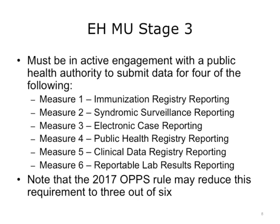The Meaningful Use Stage 3 Public Health Objective requires that eligible hospitals be in active engagement with a public health authority to submit data for three of the following: Measure 1, Immunization Registry Reporting; Measure 2, Syndromic Surveillance Reporting; Measure 3, Electronic Case Reporting; Measure 4, Public Health Registry Reporting; Measure 5, Clinical Data Registry Reporting; and Measure 6, Reportable Lab Results Reporting. Note that the 2017 Outpatient Perspective Payment System, or OPPS, rule may reduce this requirement to three out of six. The hospital could choose to report to more than one public health or clinical data registry. Also notice that for MU Stage 3 and MIPS, registries are classified as public health registries and non-public health, or rather clinical data registries.